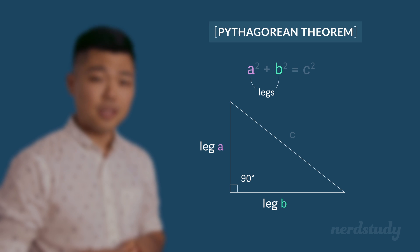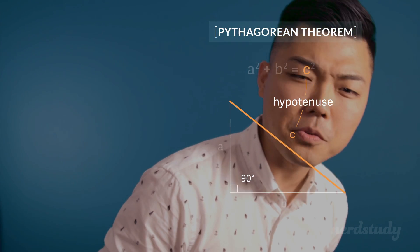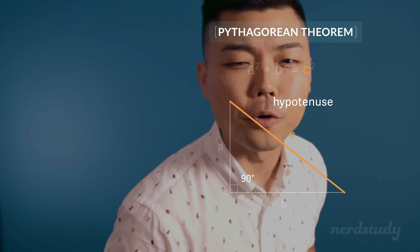So a and b are called legs. The side that is not a leg, which is right over here, is called the hypotenuse. The hypotenuse. Sounds pretty cool, right?